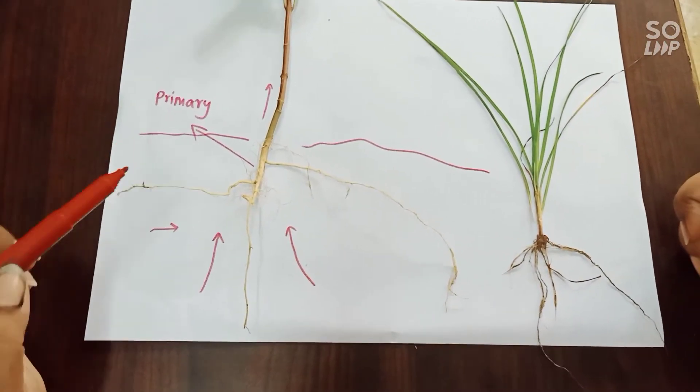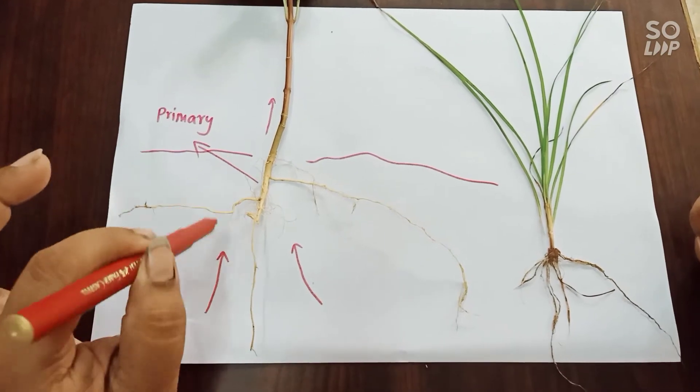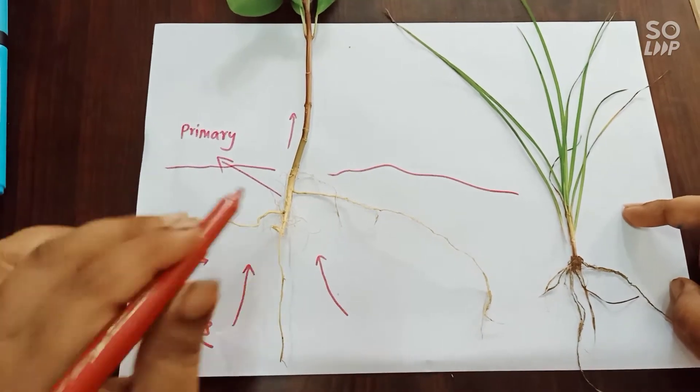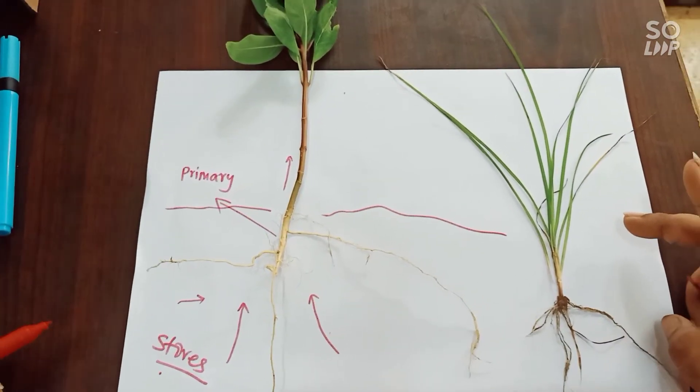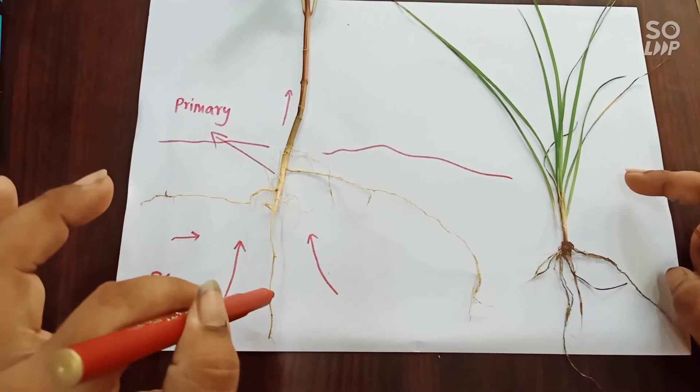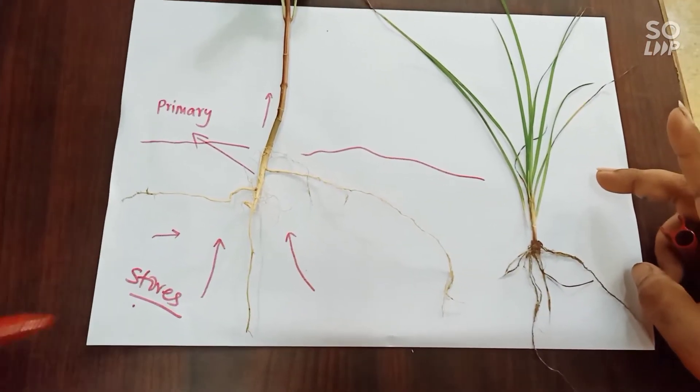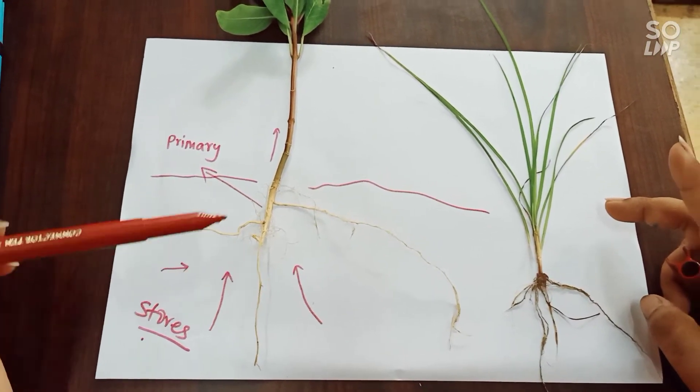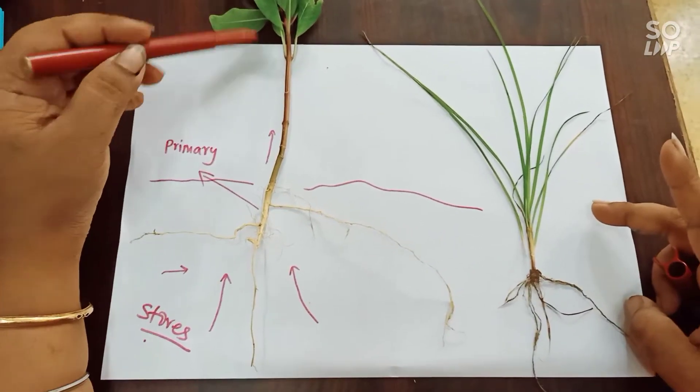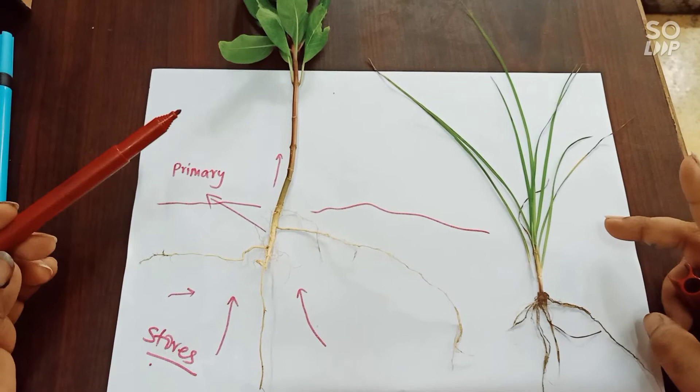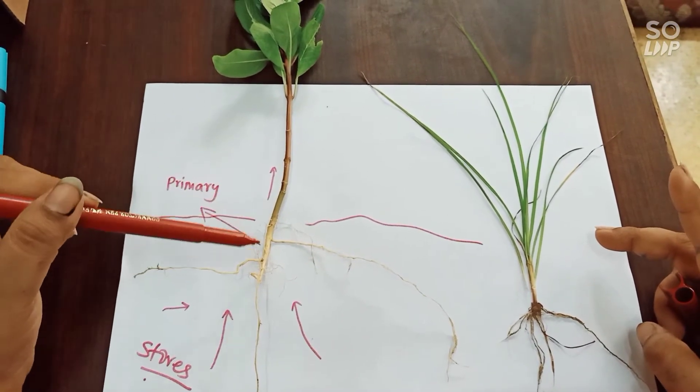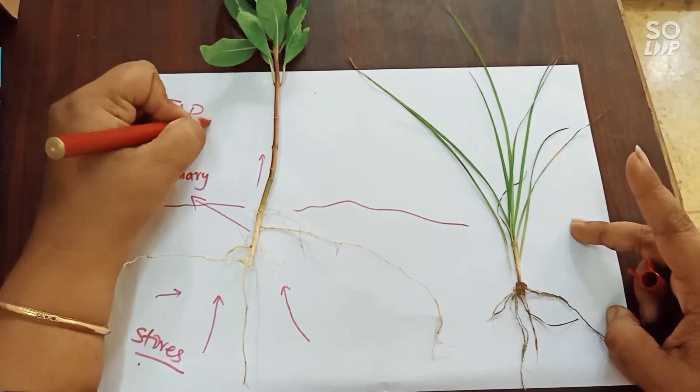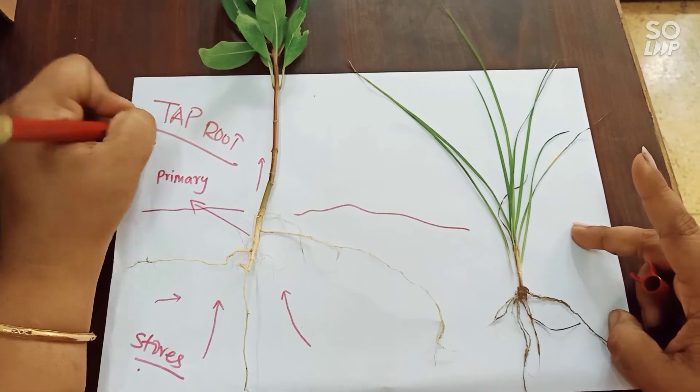And another point which is there in case of tap root is that it stores the food. The food is stored in the form of food in this root. So the first and the foremost part is a primary root. You can see in case of tap root what happens. It's a thick root which tapers downwards. Usually this plant is actually a cotyledon plant, and cotyledon plant means the dicotyledon plant. The dicotyledon plant has always a tap root system.